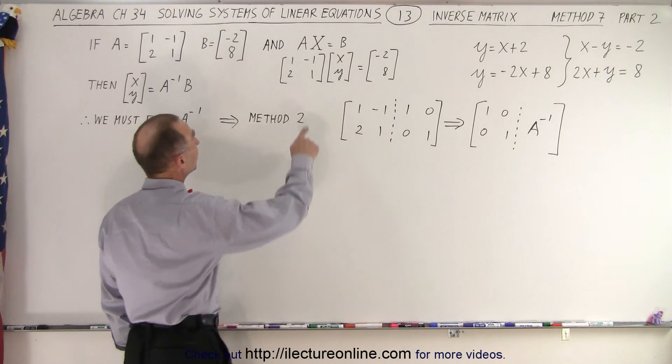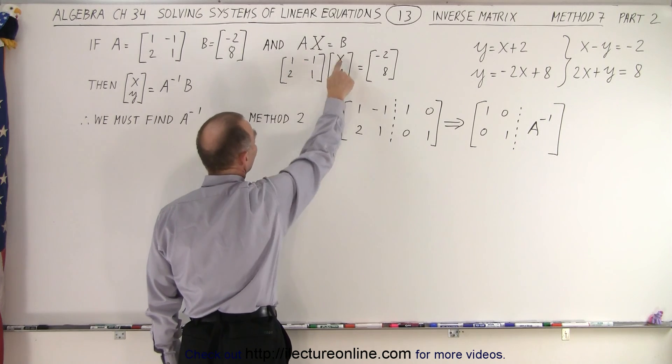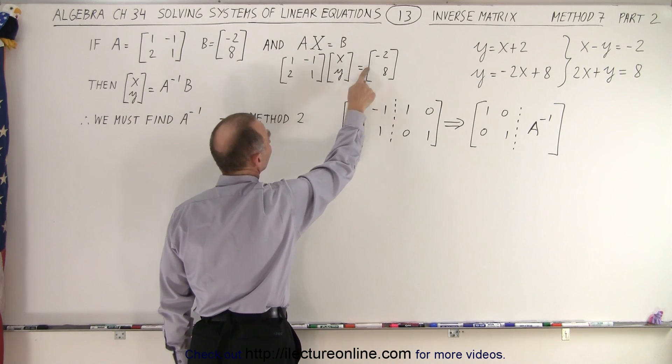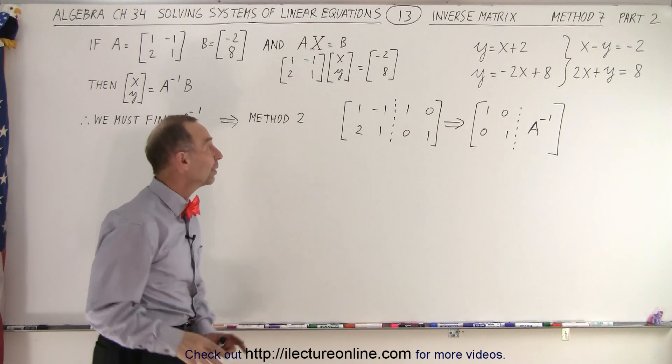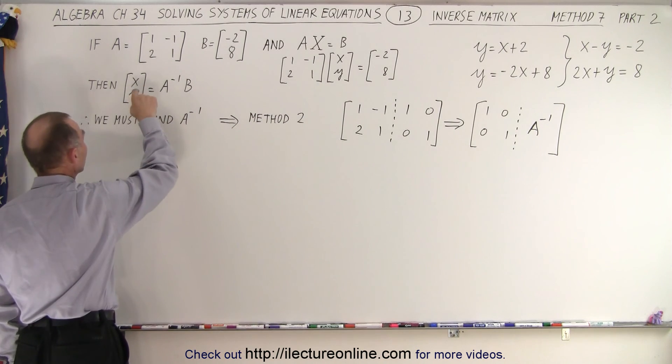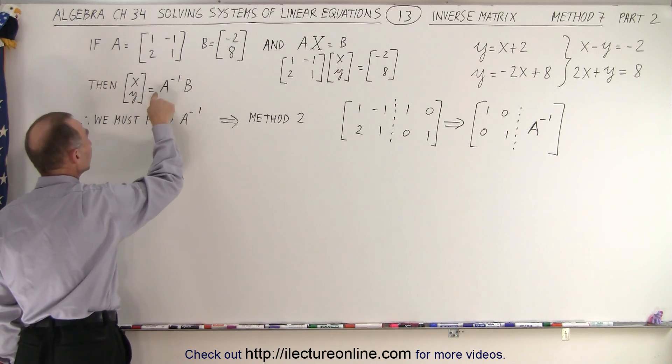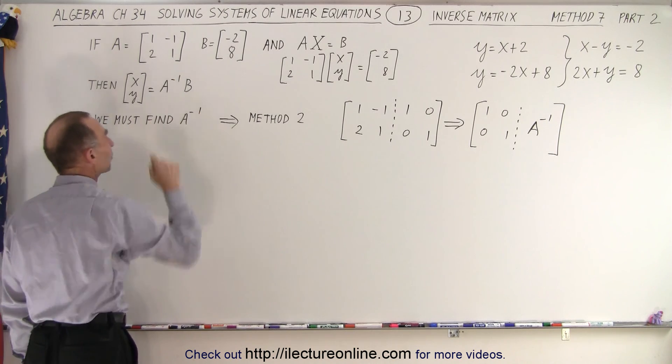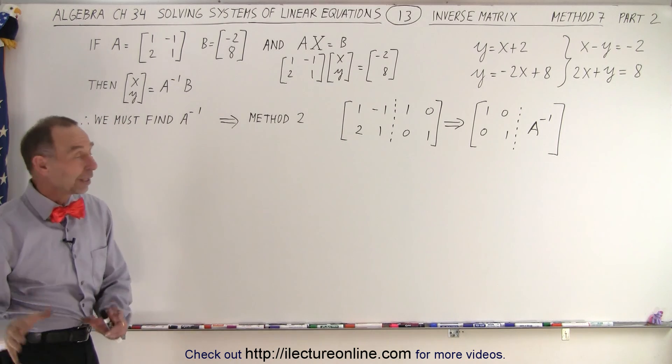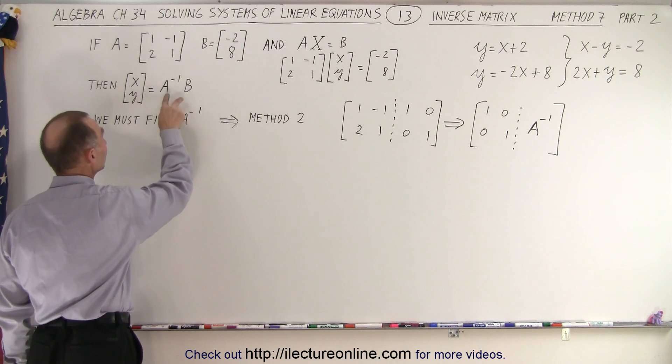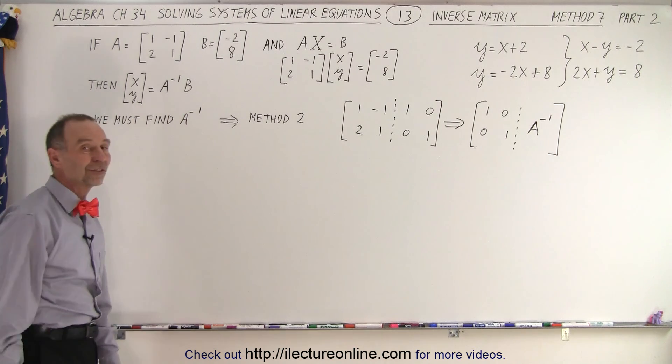And we can say that the A matrix multiplied times the xy matrix is equal to the B matrix. And then we can say that the xy matrix, the values for x and y, is equal to the inverse matrix of A times B. And remember, all we have to do then is find out what this is equal to and then multiply the two matrices together.